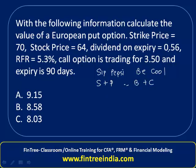However, this is a dividend-paying stock, and we know that after the dividend is paid the value of the stock decreases. So we make a small adjustment: Stock minus Present Value of Dividend plus Put equals Bond, which is the present value of the strike price (X divided by (1 + RFR) raised to the time period), plus the Call option.